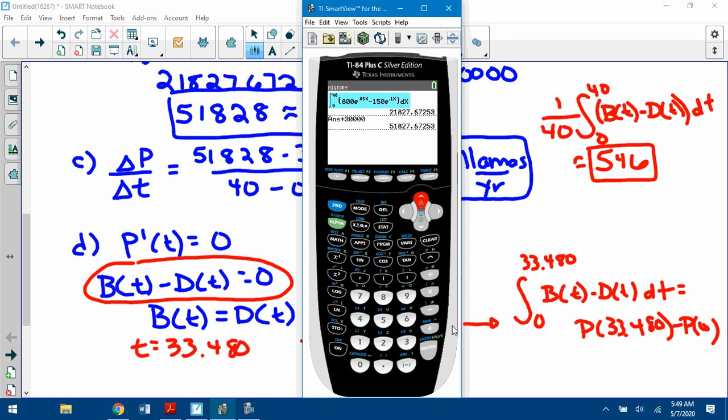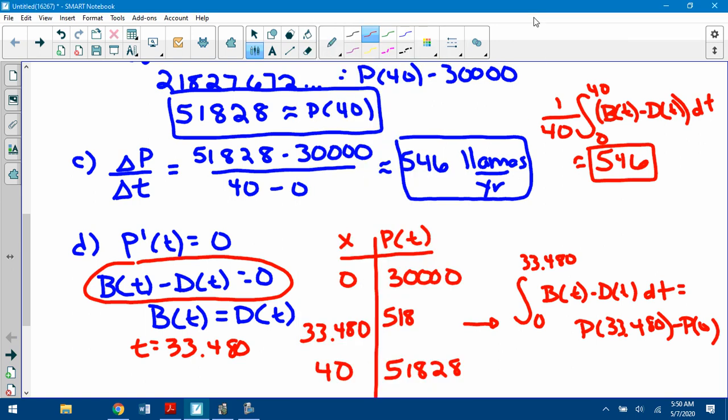Sorry. Let me go back and change that. The upper limit needed to be 33.480. Okay, sorry. There's that number plus the 30,000. 51,167. 58, what was it? 58,167.